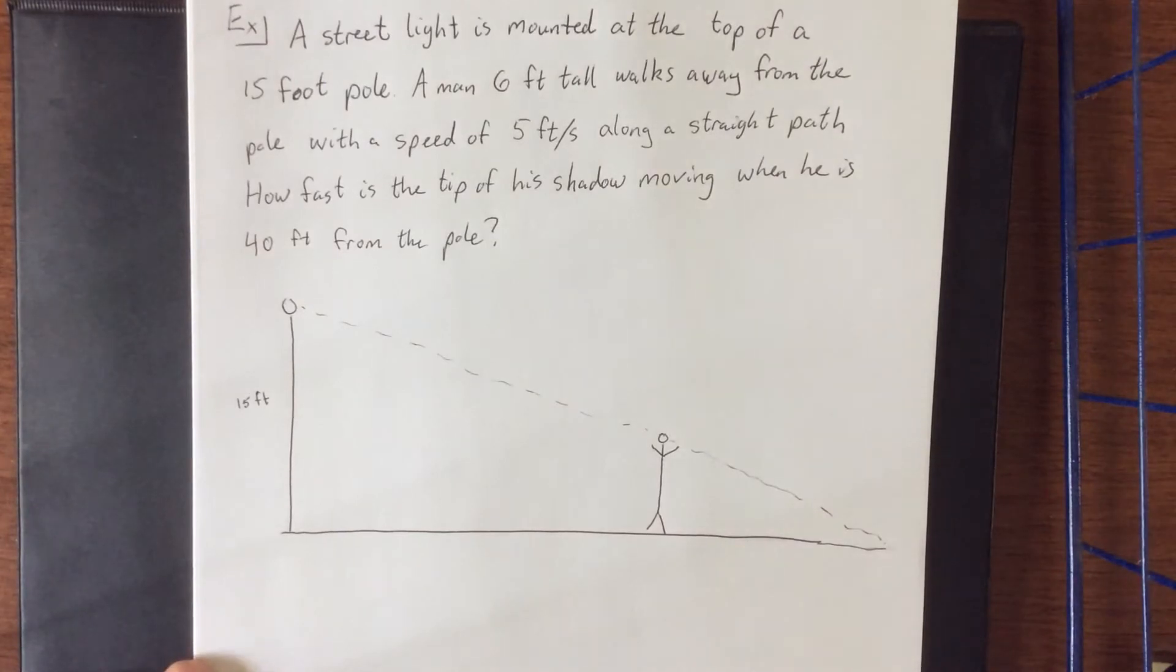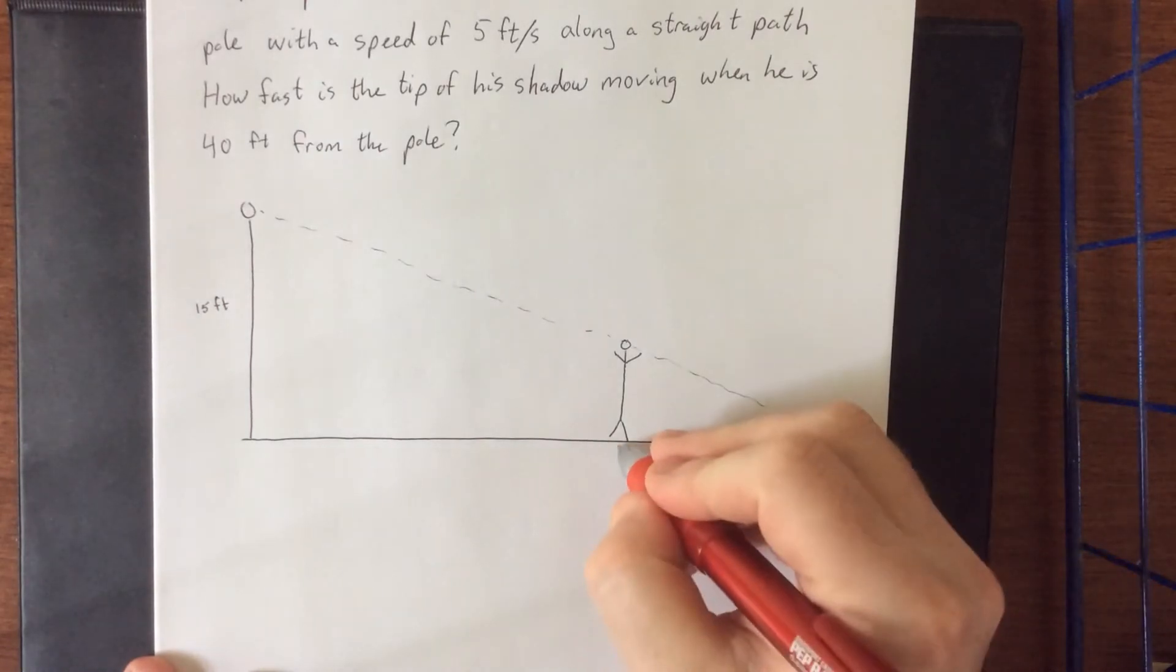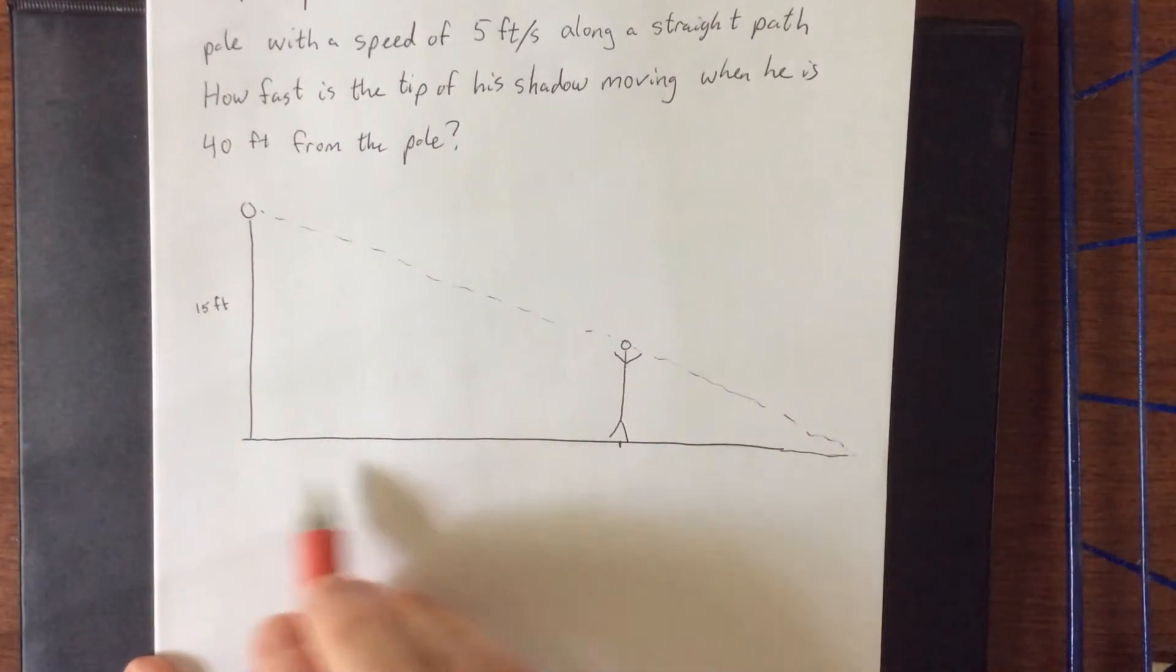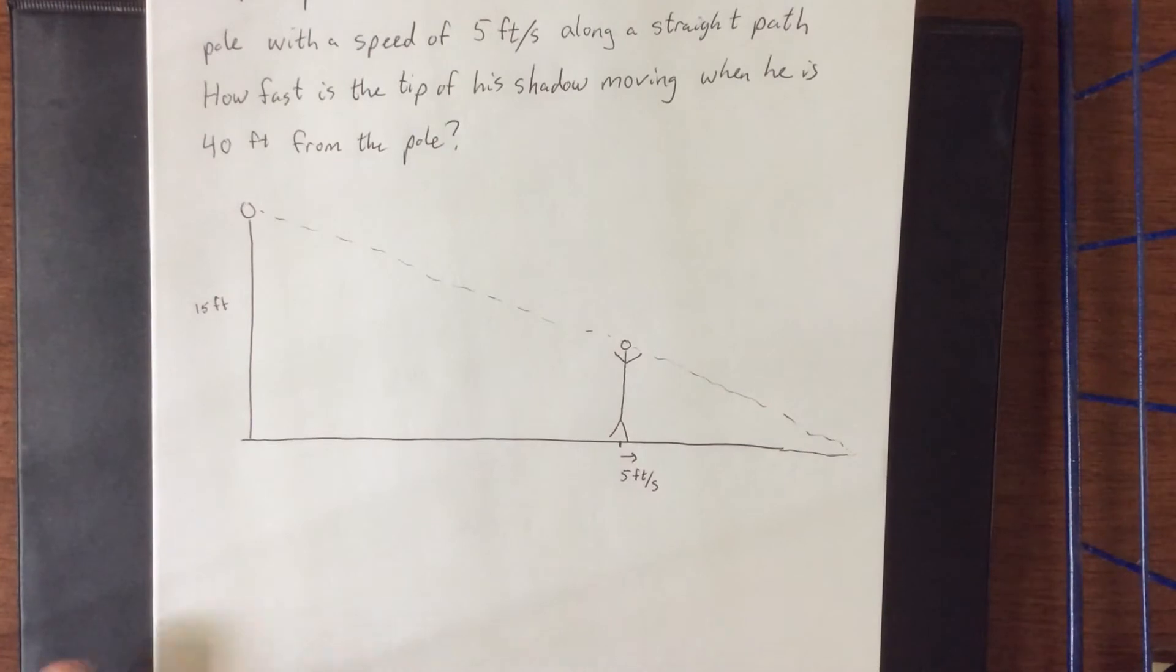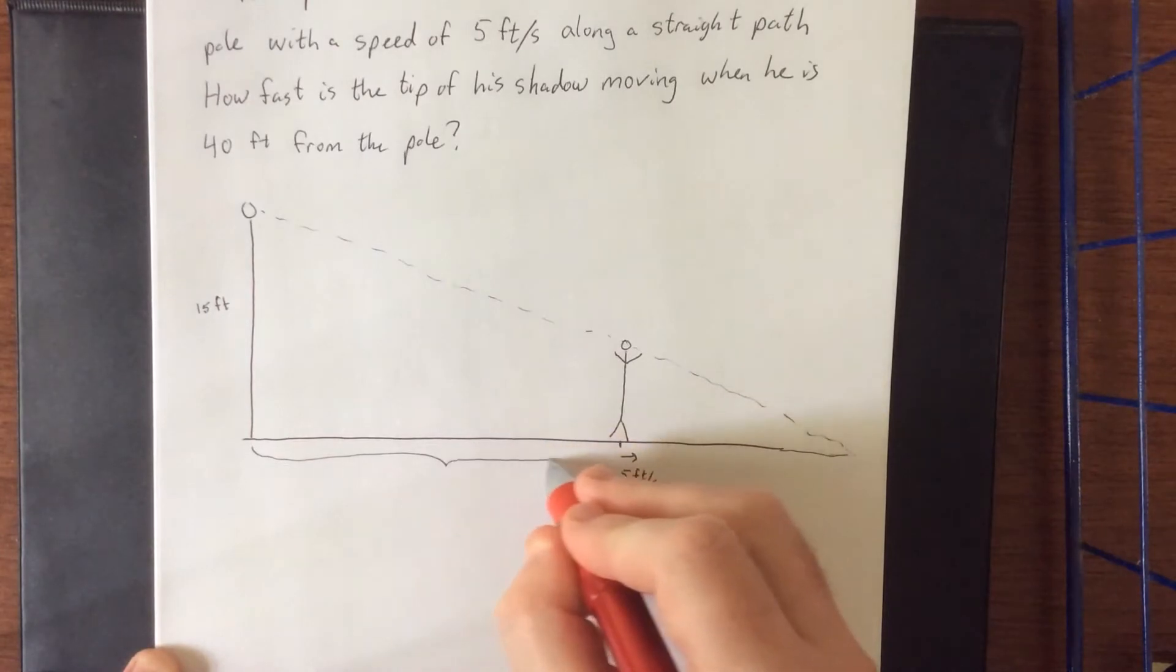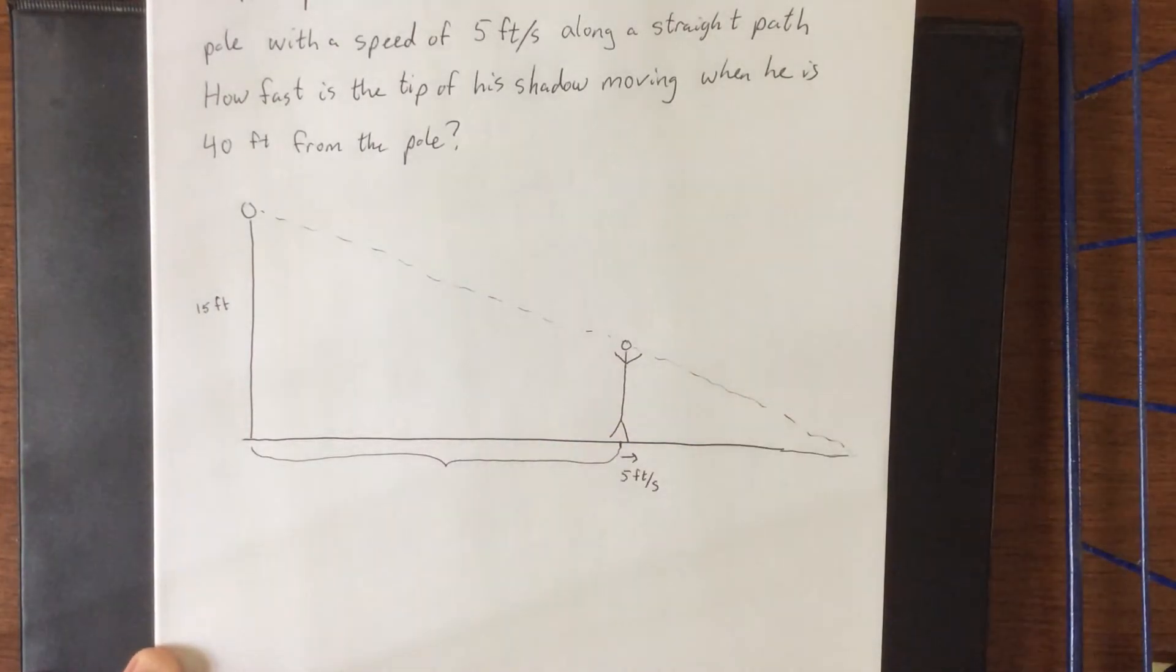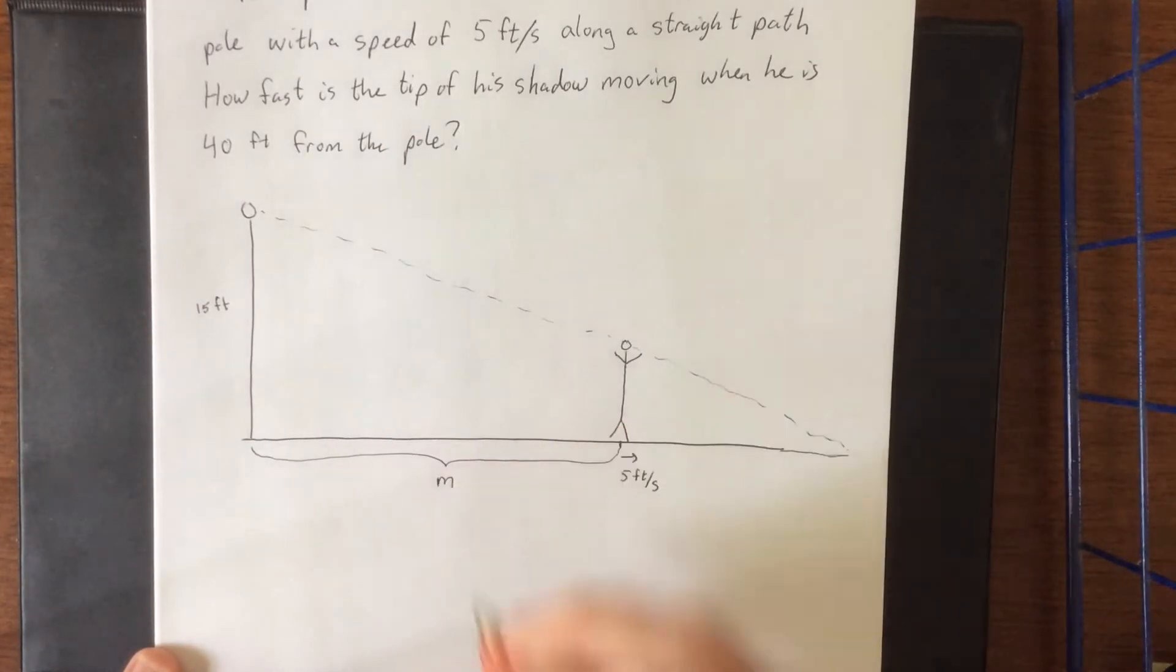So we have been posed the question, how fast is the tip of the shadow moving at a certain point? Now, here are some things that we know. The man is moving in this direction at a rate of 5 feet per second. So with that in mind, I think it's going to be important to define one of our variables to be this distance right here. This distance right here I'm going to refer to as M to describe the position of the man.